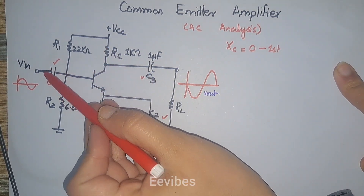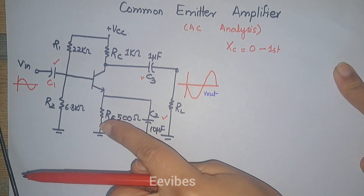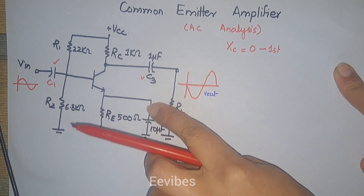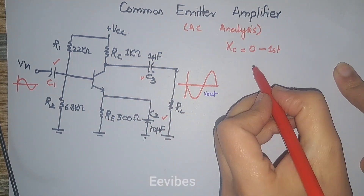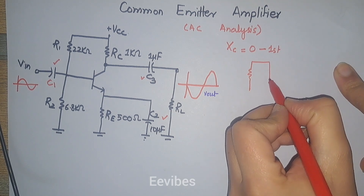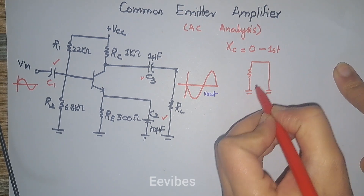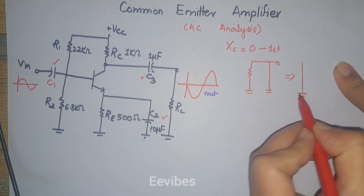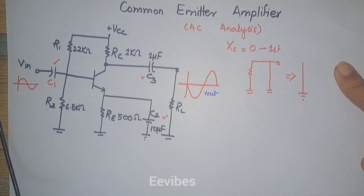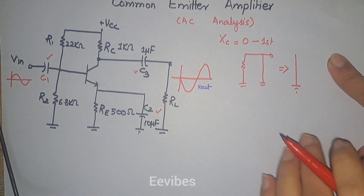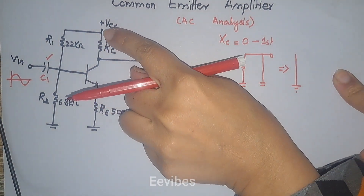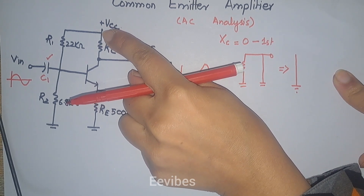In the AC equivalent circuit, the capacitor is replaced with a short circuit. At the emitter terminal we have a resistor in parallel with a short circuit, and whenever a resistor is in parallel with a short circuit the equivalent is simply a short circuit. So the emitter will be at AC ground.